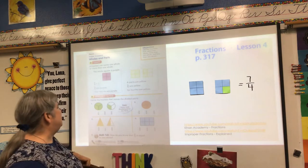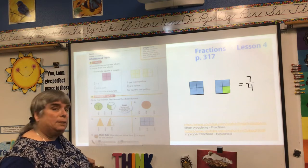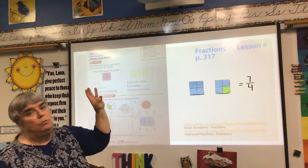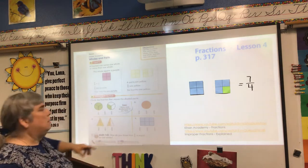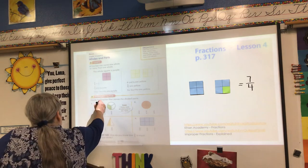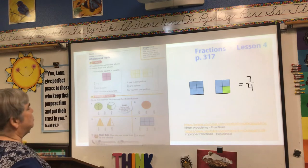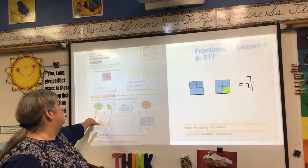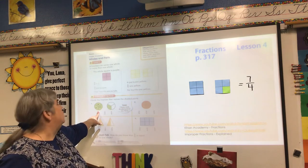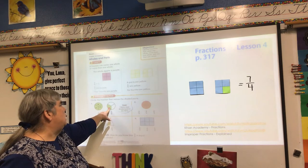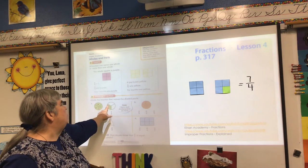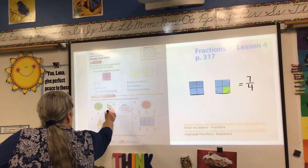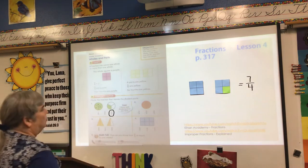Now we're going to look down here. It says circle the fraction that names the shaded part. Let's count together. These shapes are divided into thirds — one, two, three — so these are definitely divided into thirds. But this is a second circle, so this is one whole because it's three-thirds. And then one more is also shaded, so I have four-thirds. That means four-thirds is the correct answer.